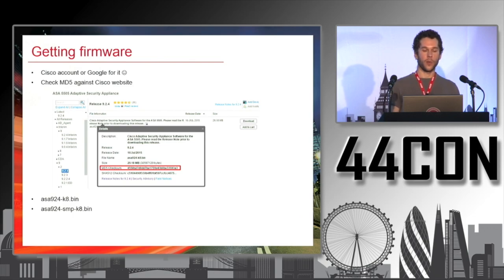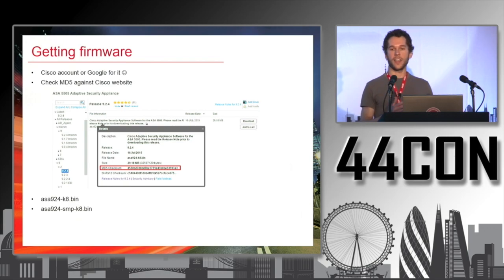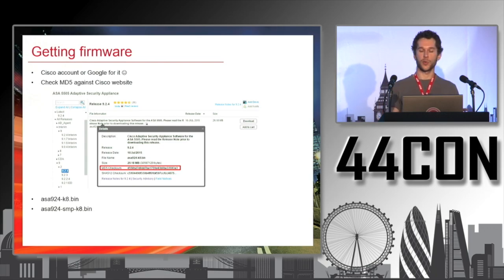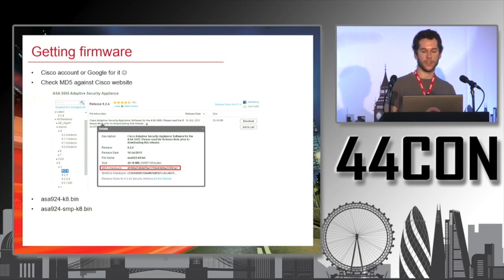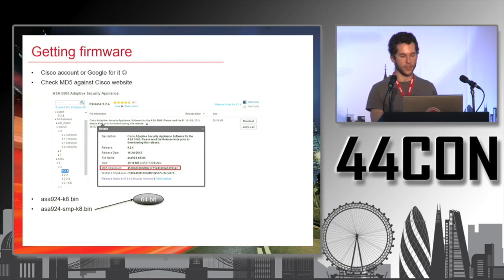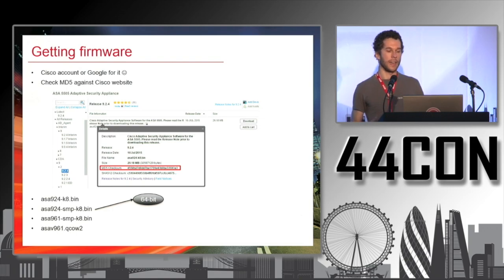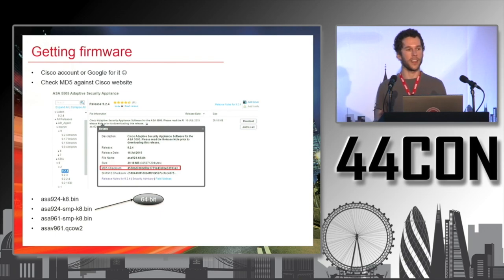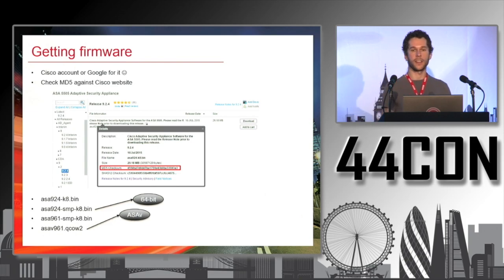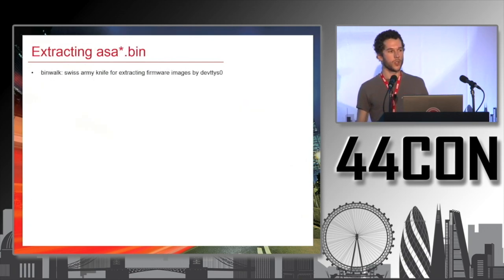The firmware naming convention is ASA then the version dot bin. For example, ASA924.bin. SMP indicates multiprocessing — which we figured out is usually 64-bit. For example, ASA961.smp versus ASAv961.qcow2 — the first is 64-bit and the ASAv is for virtualized, which is what you load into GNS3.